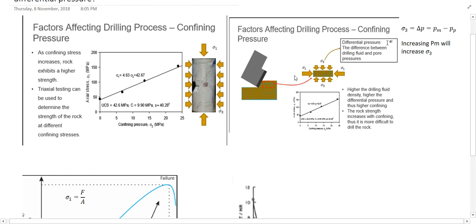Differential pressure is mud pressure minus pore pressure. With increasing mud pressure, we are increasing the differential pressure, and therefore Sigma 3 or the confining pressure is increasing.